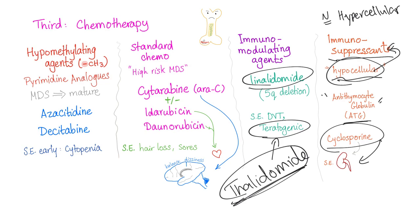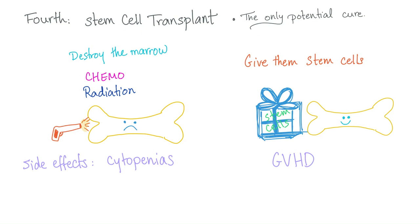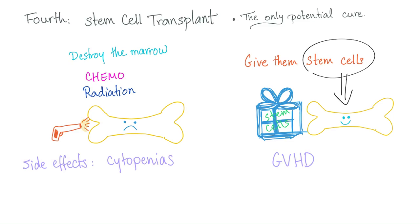Fourth: stem cell transplant — the only potential cure for myelodysplasia. The process involves first destroying the bone marrow with chemotherapy or radiation, which causes pancytopenia as a side effect, then giving the patient hematopoietic stem cells so the bone marrow can produce new blood cells. There is a risk of graft-versus-host disease — what is that? Please let me know in the comment section.